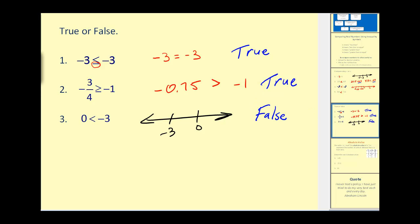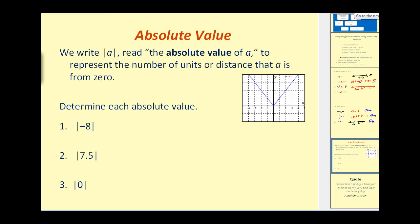Okay, let's go ahead and take a look at one more topic. Let's talk about absolute value. When we write A between two vertical bars, this reads the absolute value of A, which represents the number of units or distance that A is from 0. So since distance is always positive, when we find an absolute value, it will always be positive.